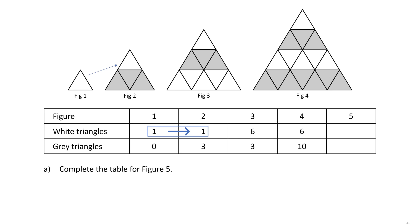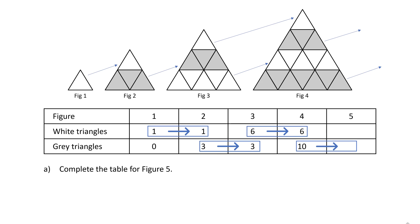Now what happens when we go from figure 2 to 3? The number of gray triangles is exactly the same. So we see that this row, the number of gray triangles is the same. When we go from 3 to 4, we see the number of white triangles will be the same. So what does that mean for figure 5? It means the number of gray triangles is going to be the same. So we can calculate the number of gray triangles in figure 5 — we just copy over the number 10.